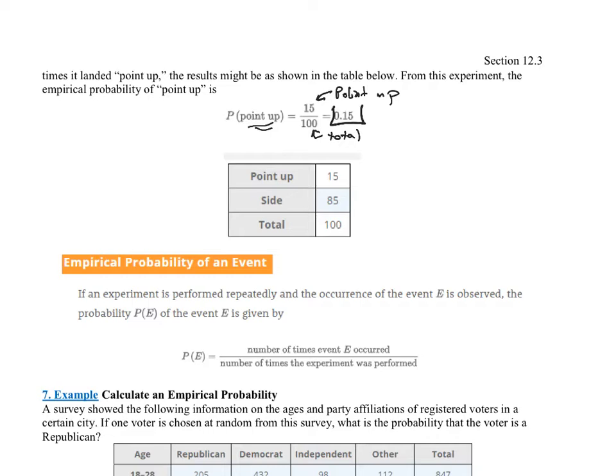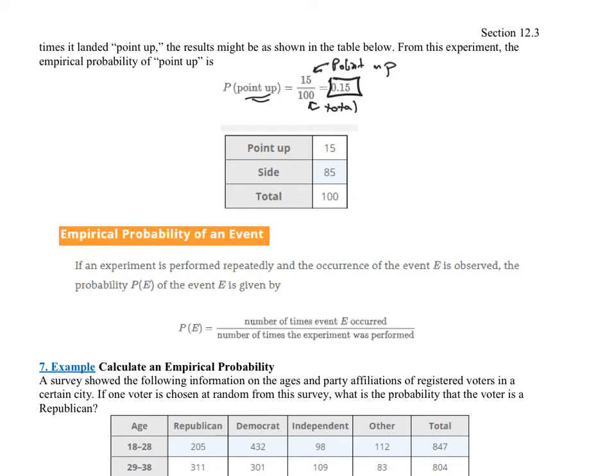What you will notice is with theoretical probability, we usually do fractions. Empirical probabilities, we usually do decimals. When it's a real-world number, we like putting it into context. In fact, what you might even do here is change it to a percent and say approximately 15% of the time, or in this case exactly 15% of the time, the thumbtack landed point up.